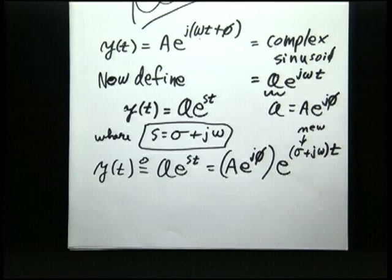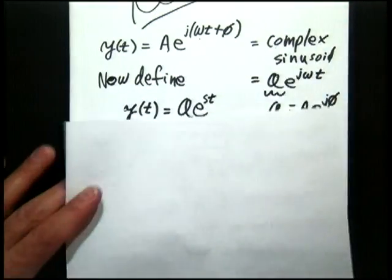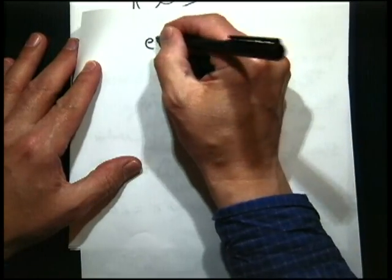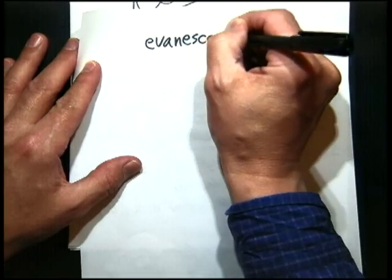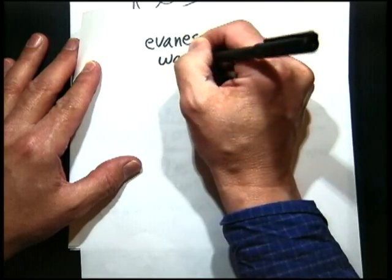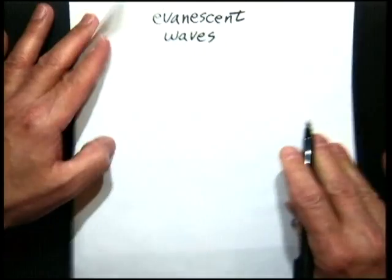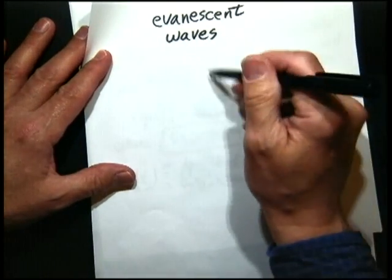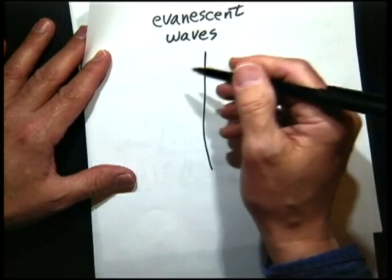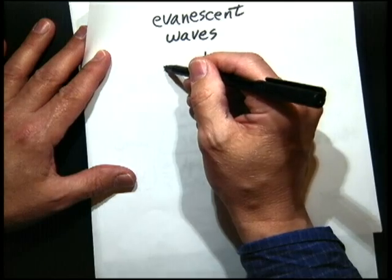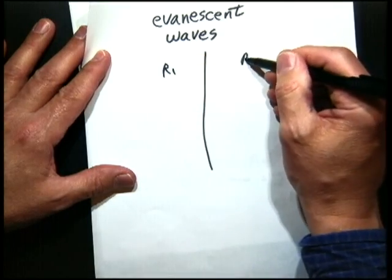I think the clearest example of that is evanescent waves. If you look up, I cannot even write that on the same page because it is so much of a digression. But let me just mention it to you as something, if you're interested, look up evanescent waves. It's an amazing thing. You have a barrier. So you're propagating in some impedance, R1. And you have another impedance, R2.